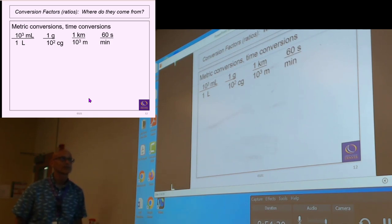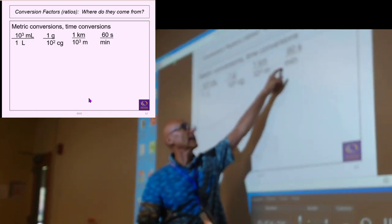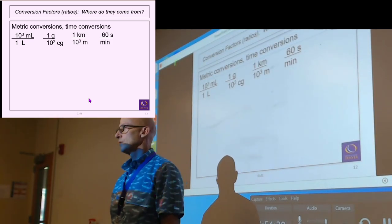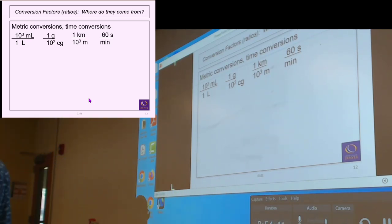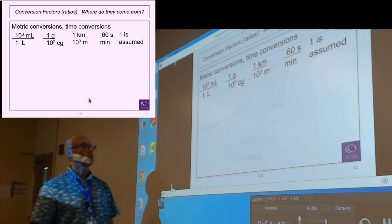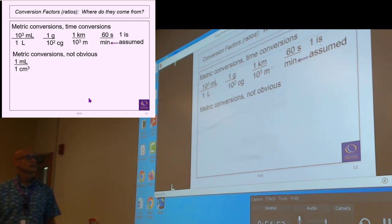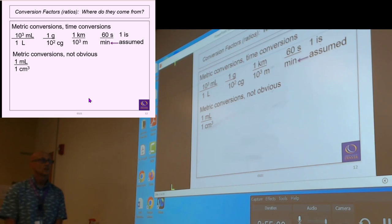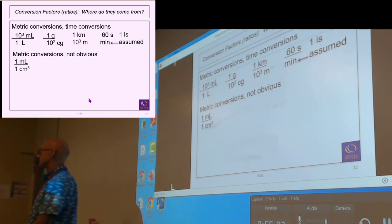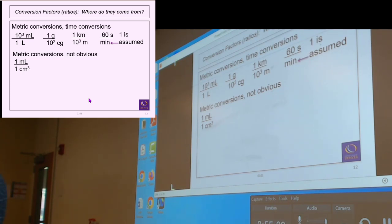Instead of saying 60 seconds equals a minute, I'll say 60 seconds per minute. This is the not-obvious one everybody needs to memorize — it's not part of the prefix system. It's the bridge — the magical bridge from the derived unit to the fundamental unit. One cubic centimeter per milliliter — you've got to know that link. These metric-to-metric conversions will always be given, but for reference: there are 2.54 centimeters per inch.